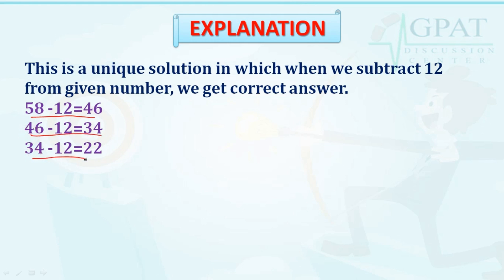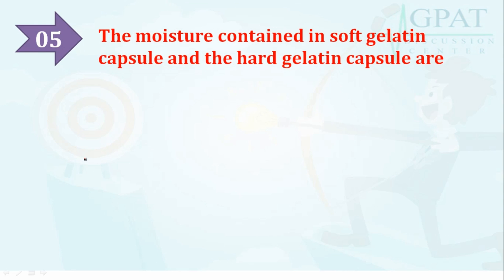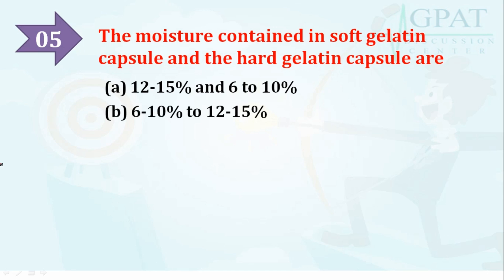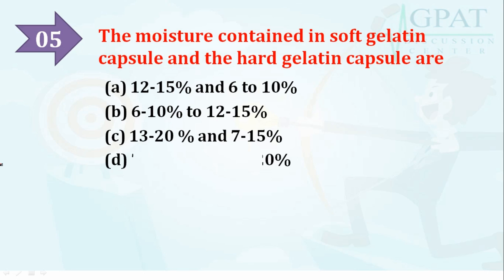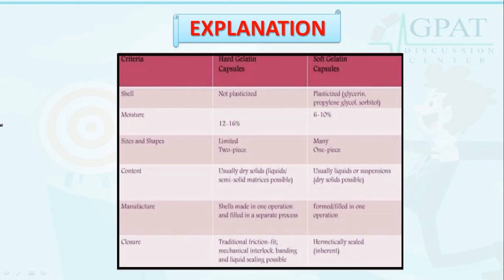Question number five: the moisture content in soft gelatin capsules and hard gelatin capsules. Options are: 12–15% and 6–10%; 6–10% and 12–15%; 13–20% and 7–15%; or 7–10% and 18–20%. The right option is 6–10% for soft gelatin capsules and 12–15% for hard gelatin capsules. To clarify: moisture in hard gelatin capsules is 12–16%, and in soft gelatin capsules it is 6–10%.